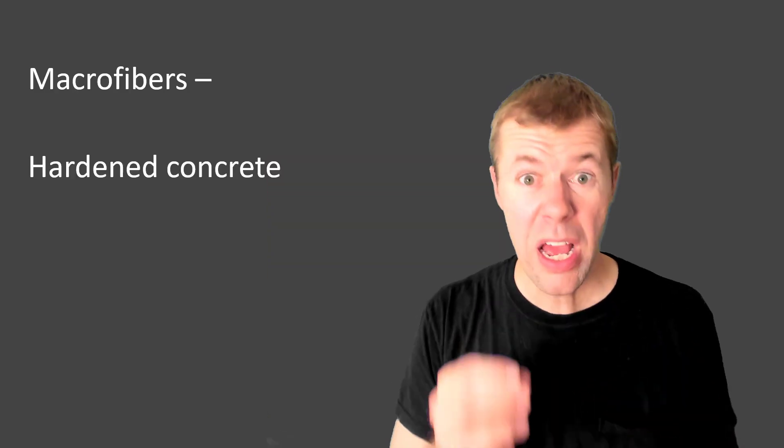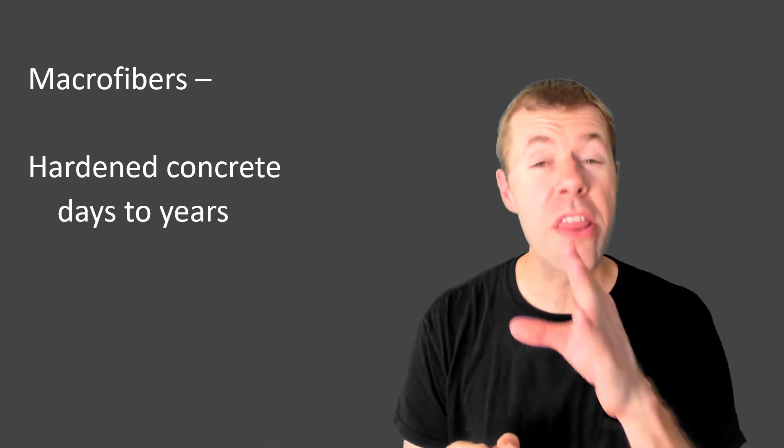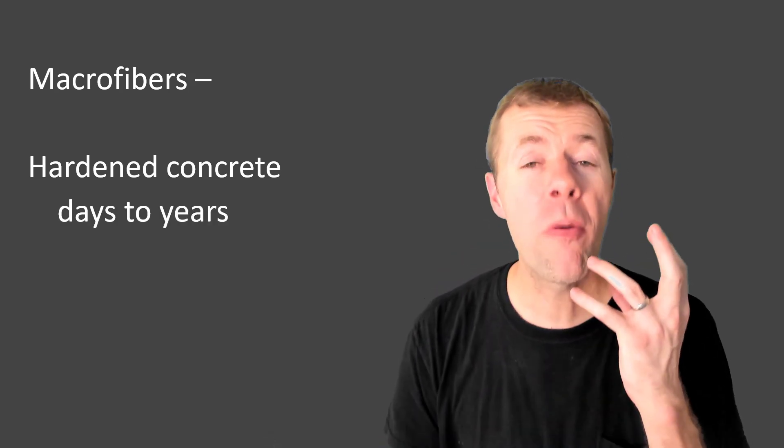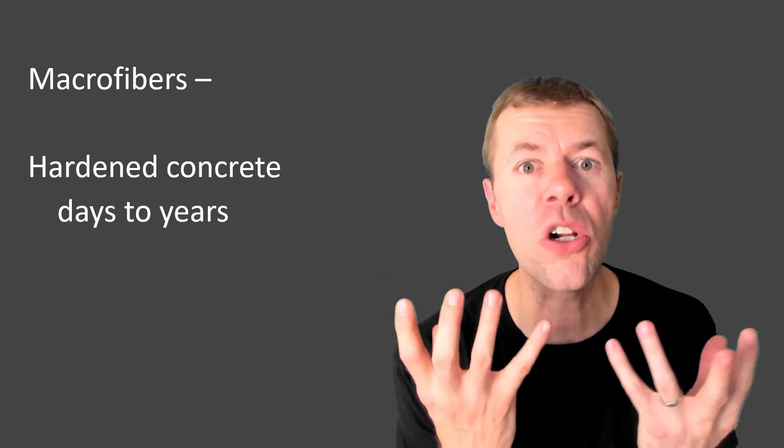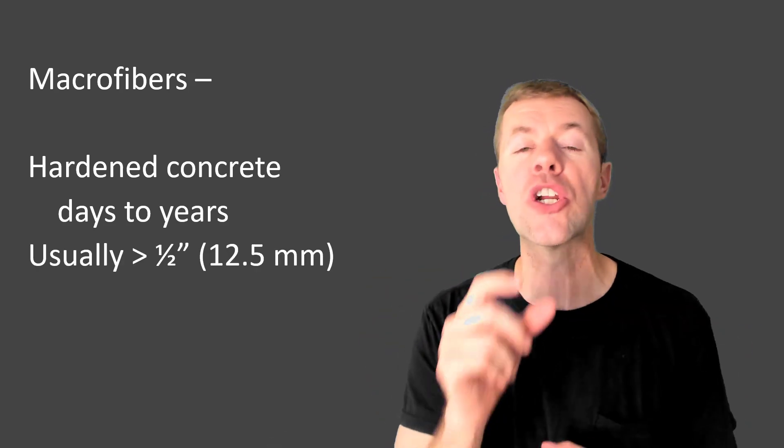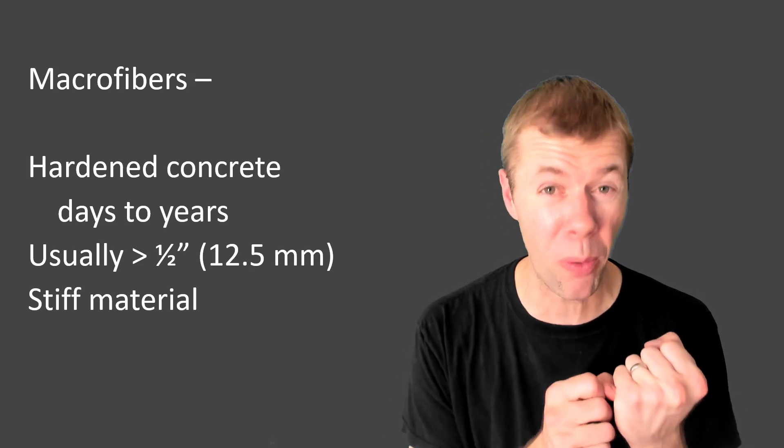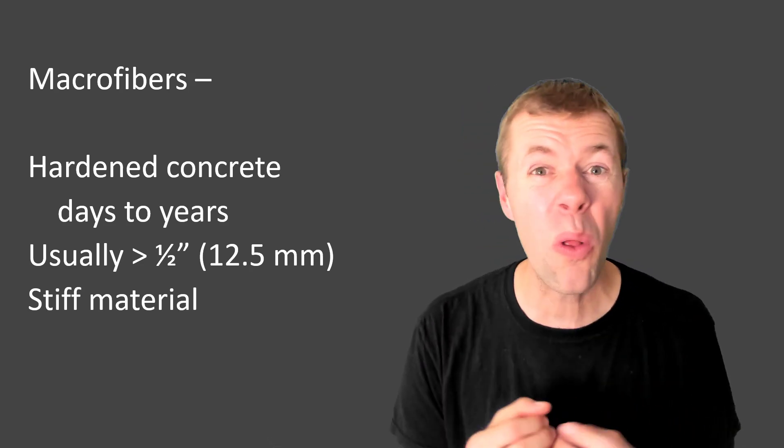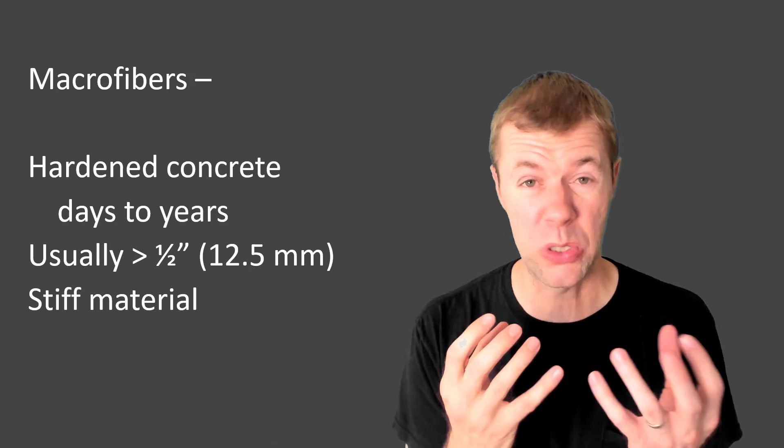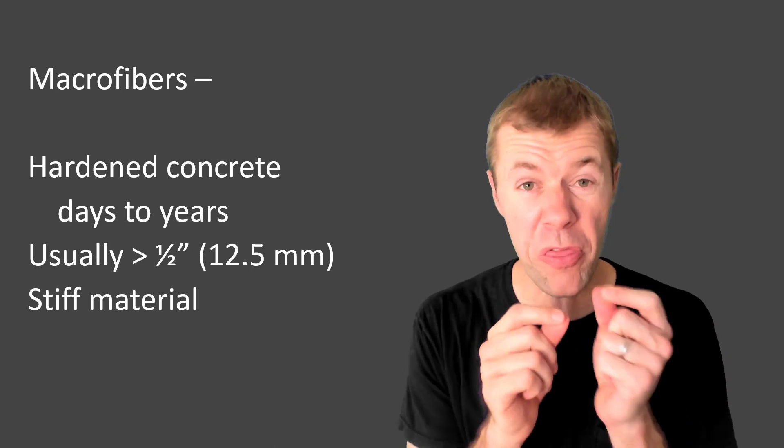Macro fibers. They are all about the hardened concrete. They are about protecting it from the first days to years after it's been made. They're usually greater than half an inch in length, and they're usually stiff material. They can be plastic, they can be steel, they can be glass, basalt, lots of different things, but they're pretty stiff.